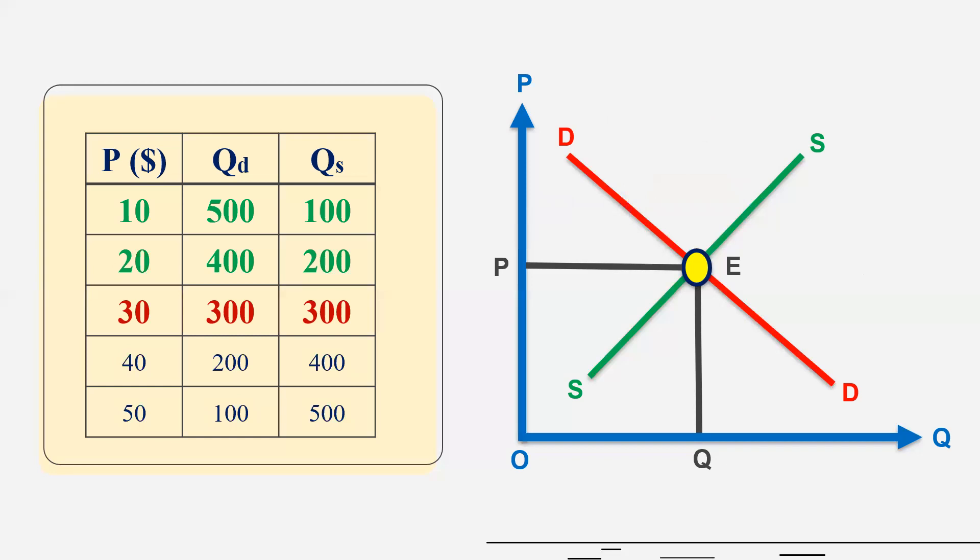Similarly, if market price is below the equilibrium price, we have the problem of excess demand. In the table, we can identify that if price is $10 or $20, quantity demanded is higher than quantity supplied.